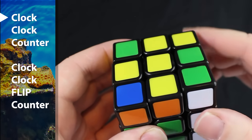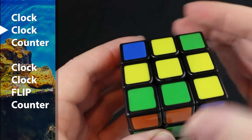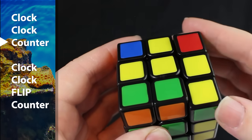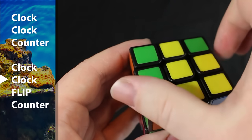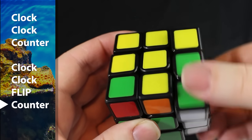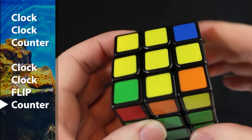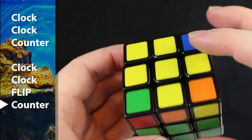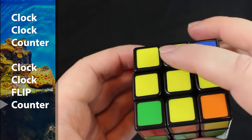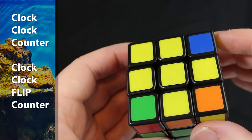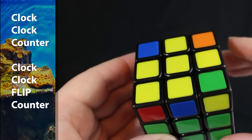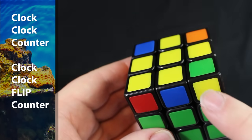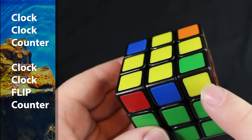So we're gonna do it like this. Clock, clock, counter, clock, clock, flip, counter. And we have the fish. It's pointing to the top left. So we need to bring that here to the bottom left, like so. And we've already got the fish food too. That means we are about to solve it.